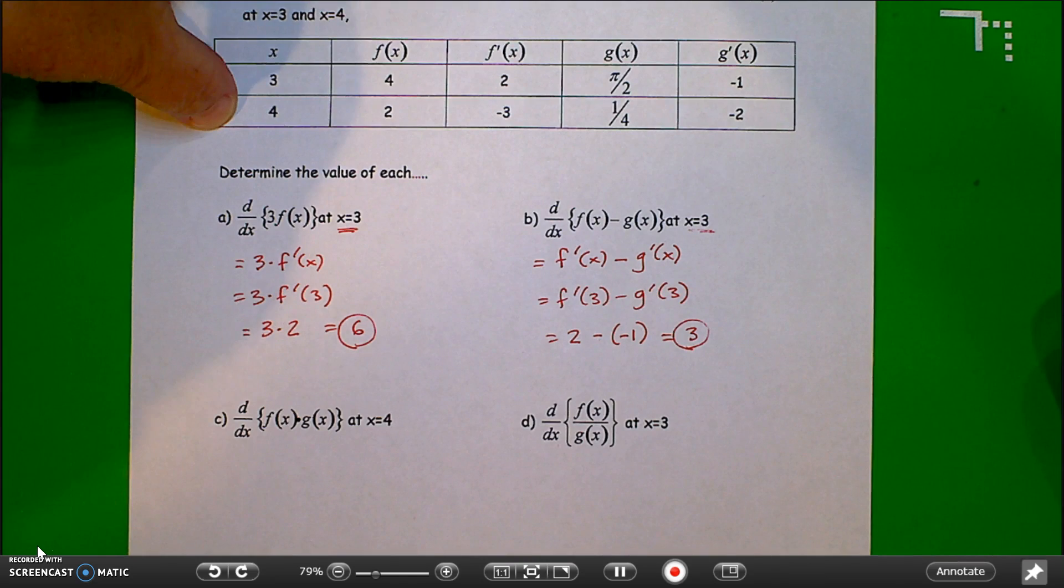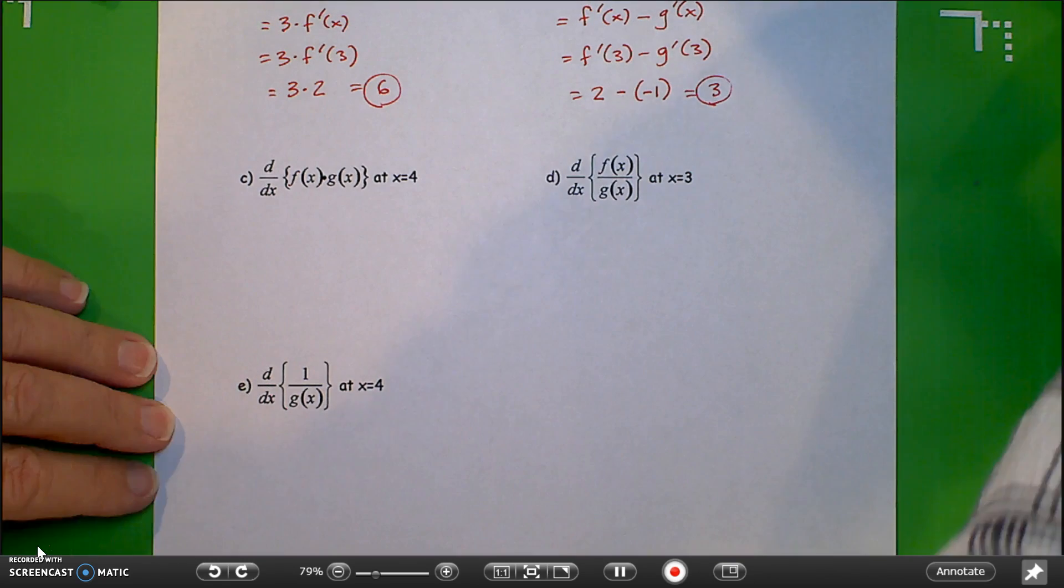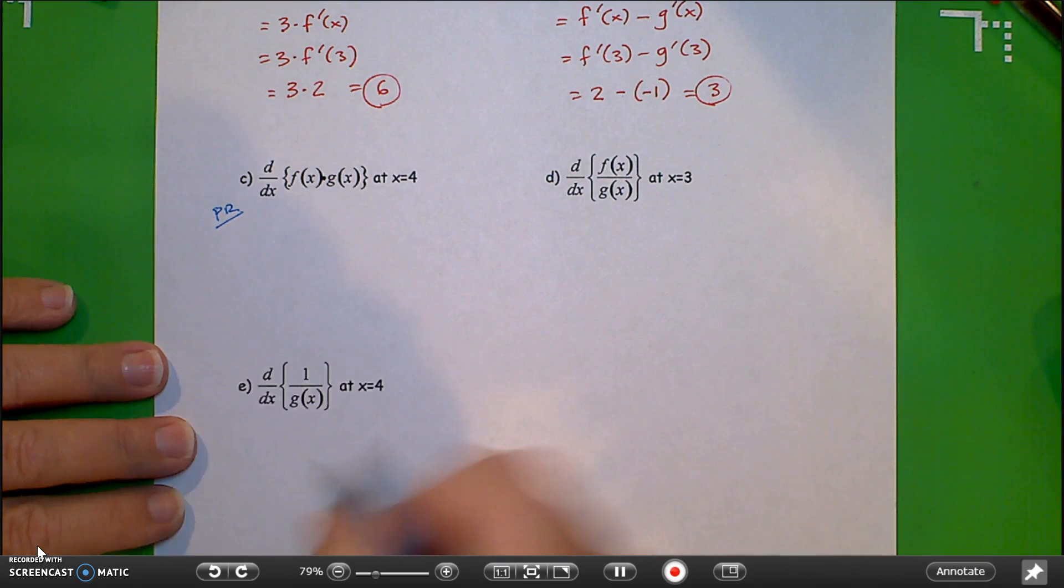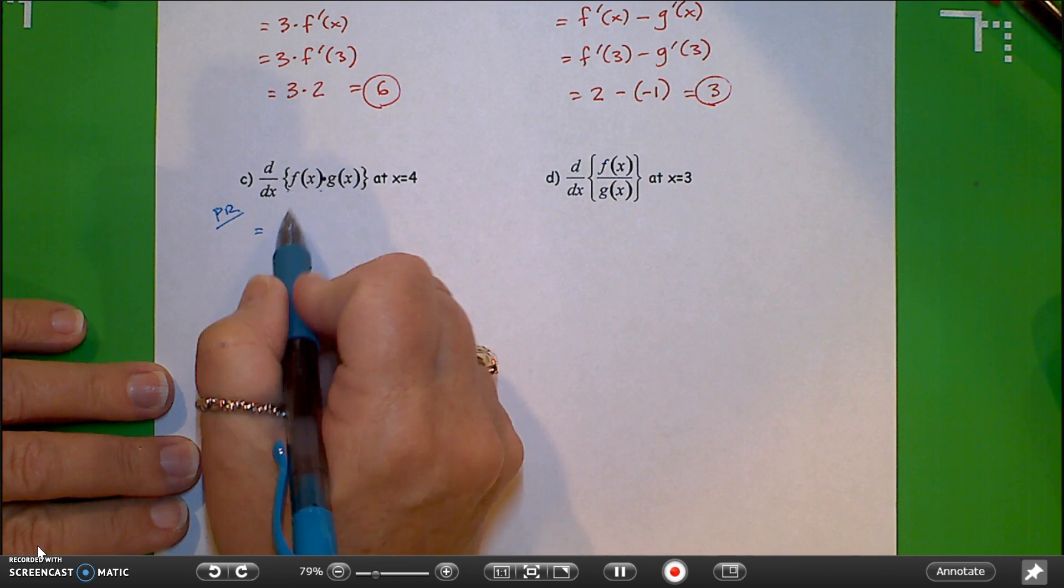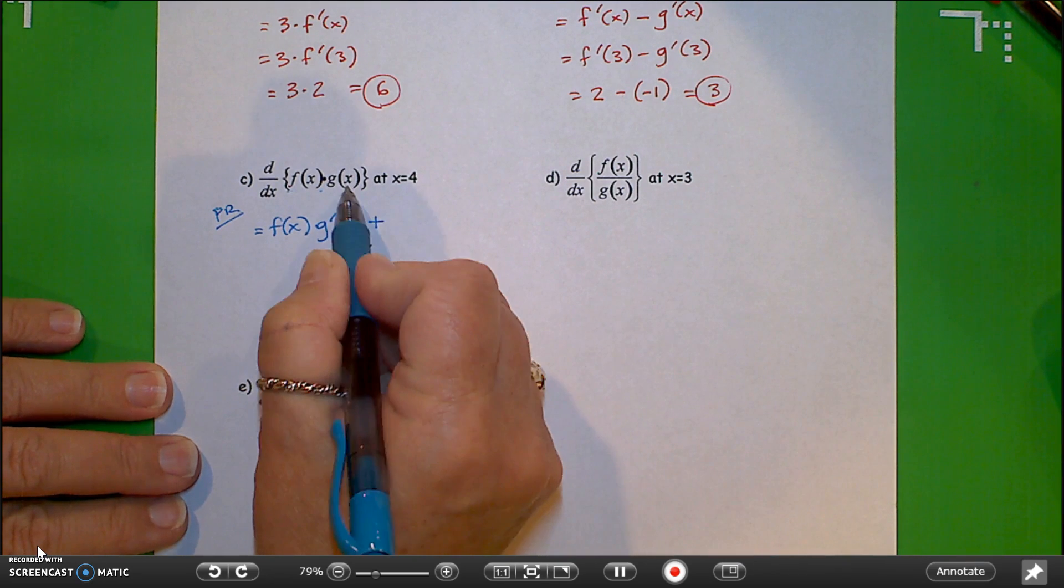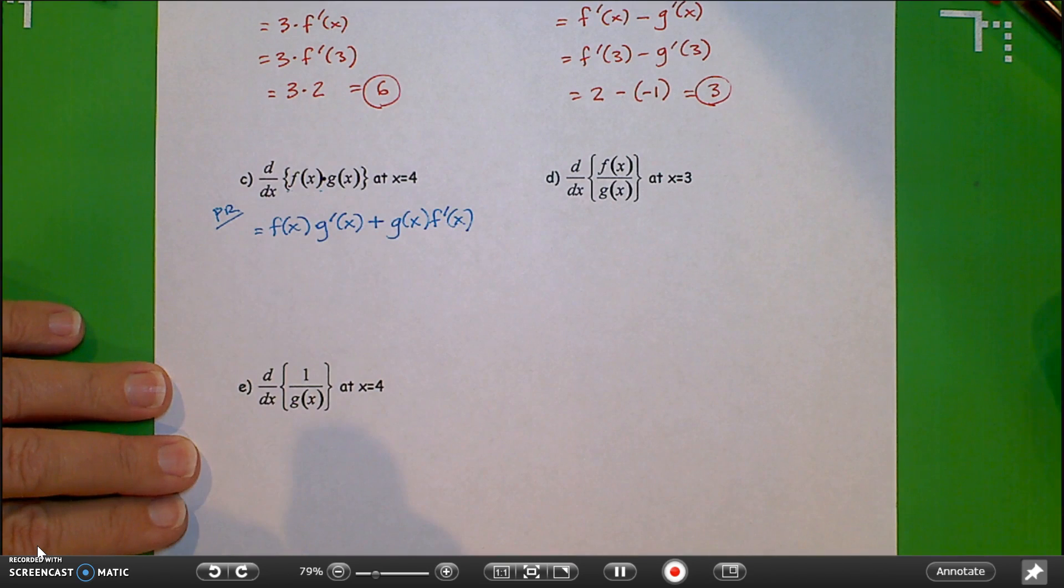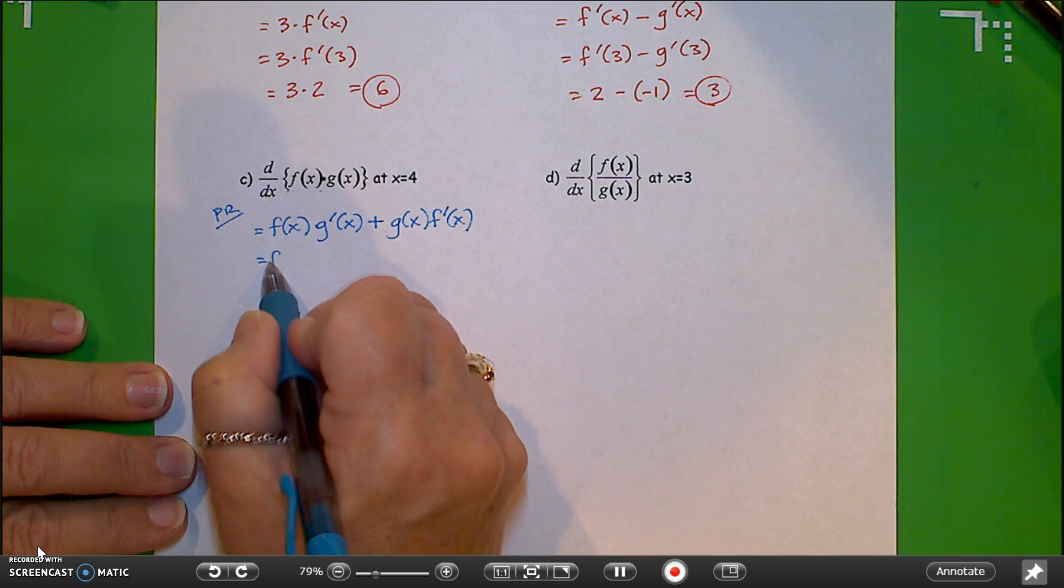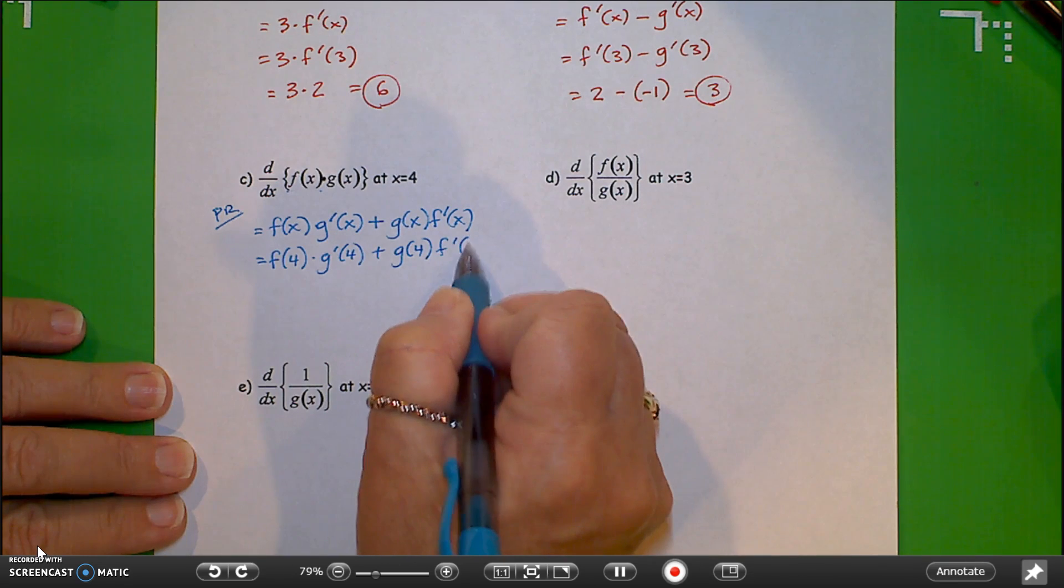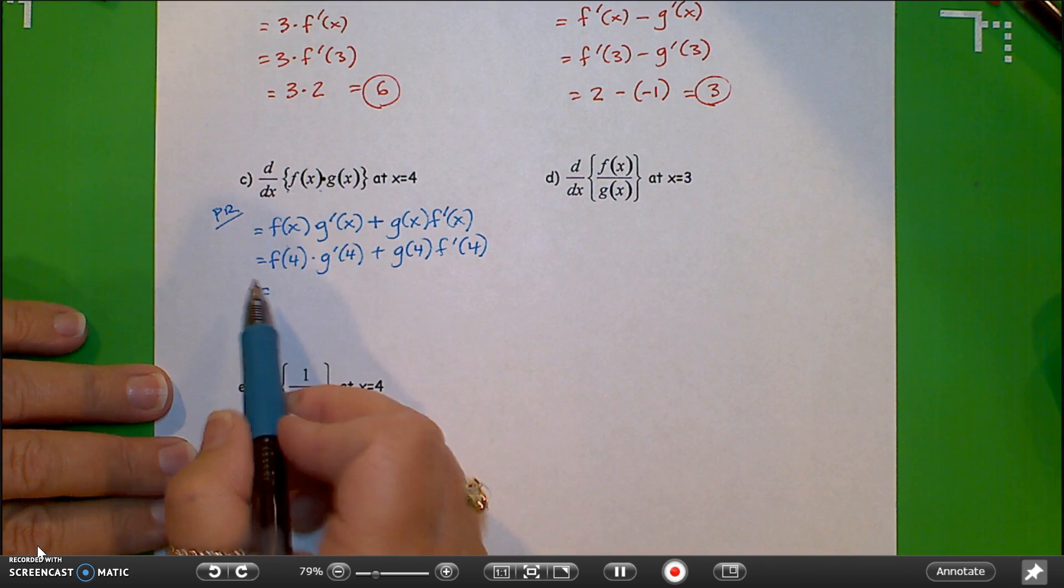All right, we'll continue on. Part c is asking us to find the derivative of the product of two functions. So on this one, we'll certainly need the product rule. We don't need to worry about where it's at until we do the work here. So the derivative is equal to, using our product rule, the first function, f of x, times the derivative of the second, which we'll denote as g prime of x, plus the second function, g of x, times the derivative of the first, we'll denote with f prime of x.